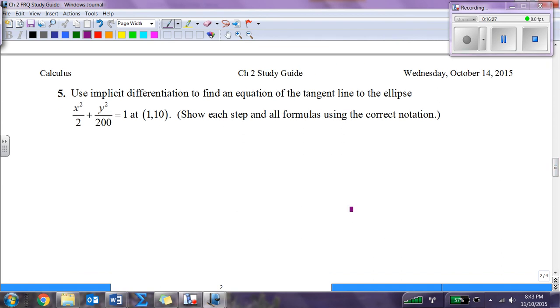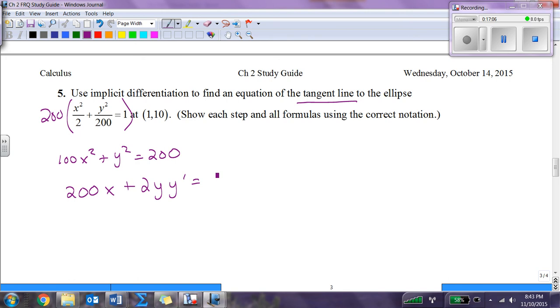Implicit differentiation to find the equation of the tangent line to the ellipse. I don't like the denominator, so I'm going to multiply through by those denominators. I'm going to have 100x squared plus y squared equals 200. Now if I take implicit differentiation, the derivative of the first term is 200x, the derivative of the second term is 2y y prime, the derivative of the third term is 0.